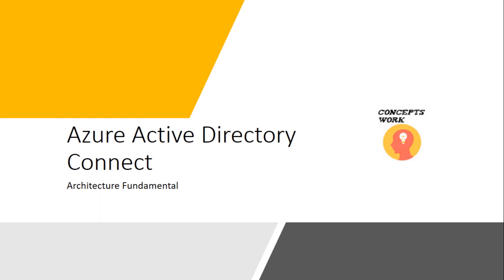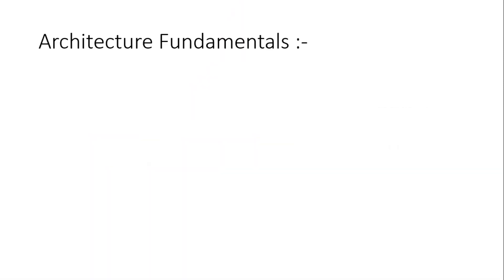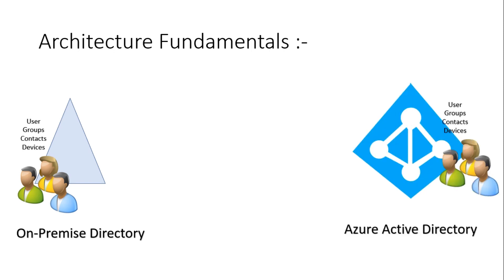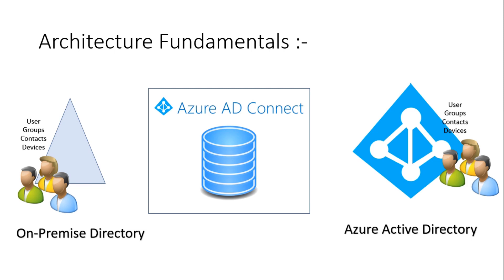In this video I'm going to talk about Azure AD Connect architecture fundamentals and how exactly an object is being synced from on-prem to the cloud. Before we move to the core concepts, let's consider a simple example where you have users, groups, contacts, and devices on your on-prem and you want to sync them to Azure AD. In order to do so, we use the Azure AD Connect tool, which has its own database and logic built inside.